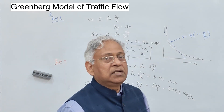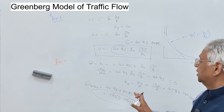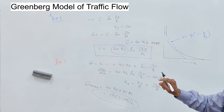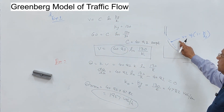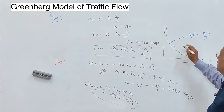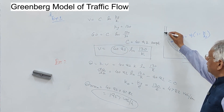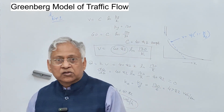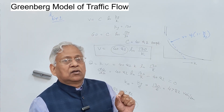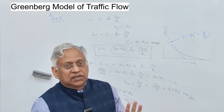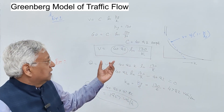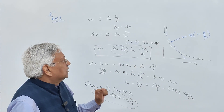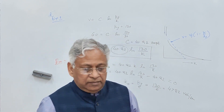That is how the Greenberg model can be used to determine speed at any density, or the flow or capacity of the road. The key difference from the Greenshields model is that Greenshields satisfies both boundary conditions through its linear speed-density relationship, though linearity is questionable over the full traffic range. That is why in 1959 the Greenberg model was suggested, based on studies conducted in a tunnel. Thank you for watching; if you have any questions, please write in the comment box.